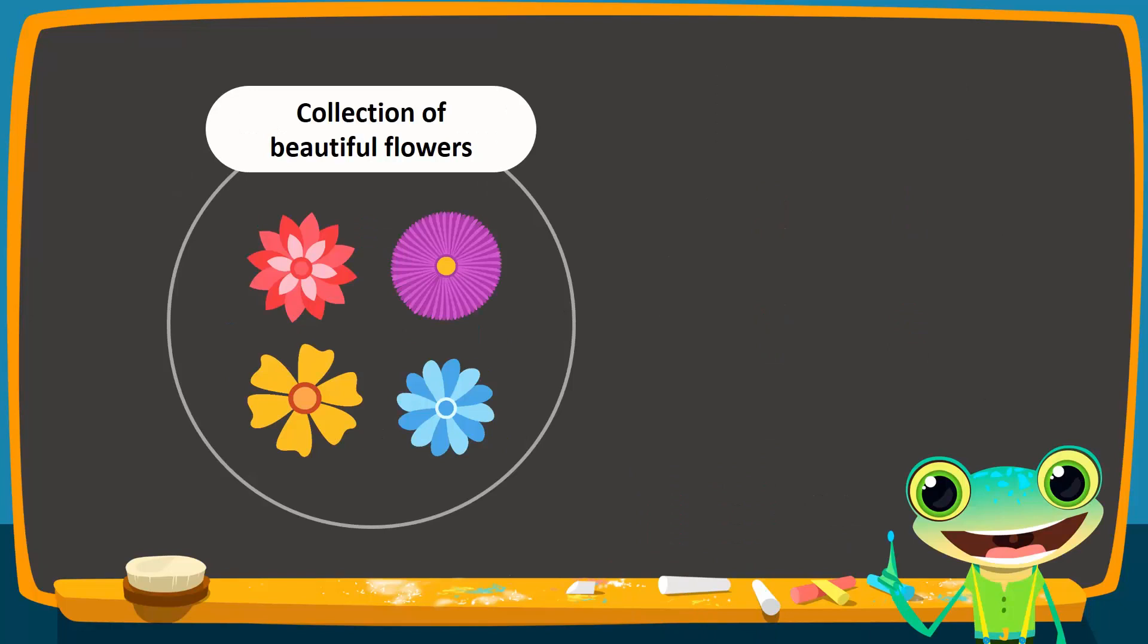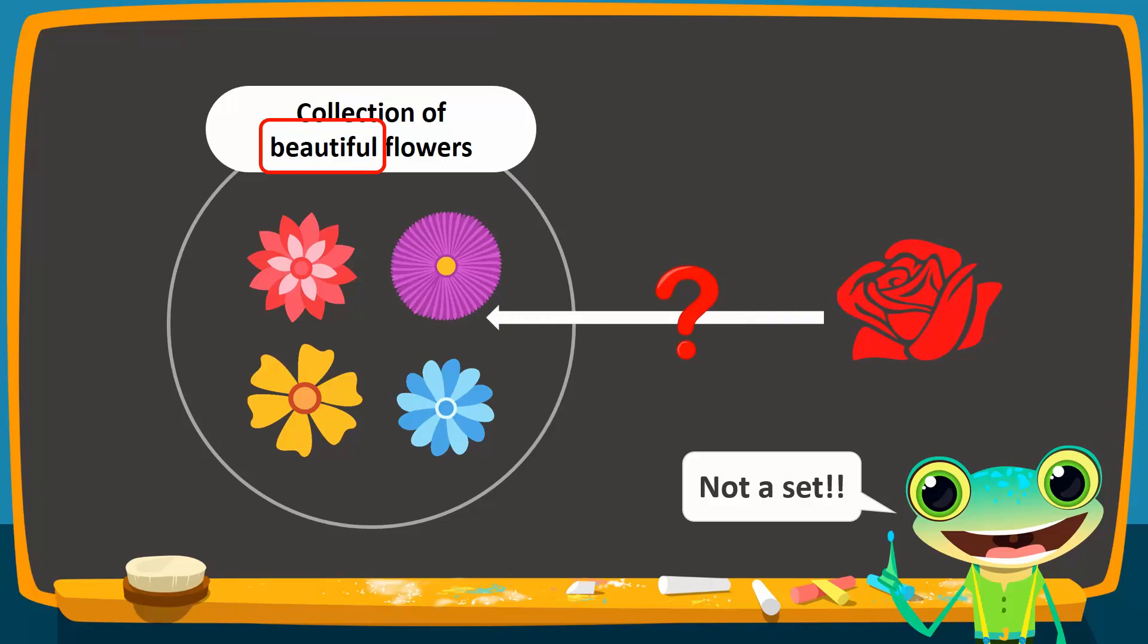Now consider this example: a collection of beautiful flowers. This is not an example of a set because the word beautiful means different things to different people. For instance, some people may say that a rose is beautiful while others may feel that a rose is not beautiful. Therefore, the property of beautiful is not well-defined. To make this into a set, we can remove the word beautiful so we end up simply with a set of flowers.